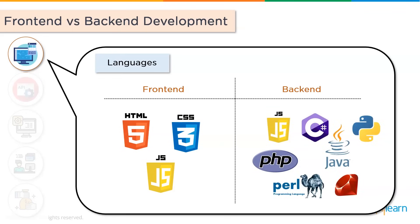When it comes to back end, the languages include Python, C#, Java, Perl, PHP, Ruby and some JavaScript. Java in particular was built from the ground up to run on the server side, so Java is extremely useful. Python is also one of the most popularly used languages, and C# is the preferred architecture for back end programming in Windows environments.